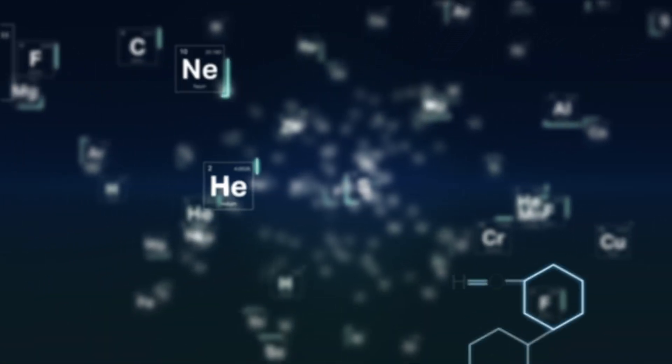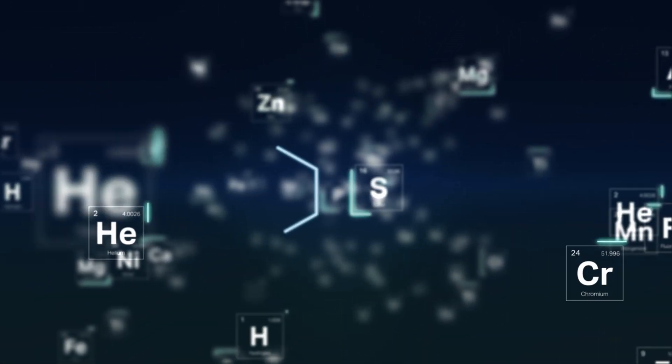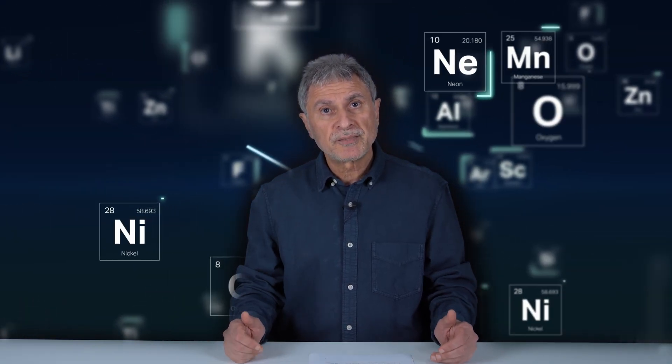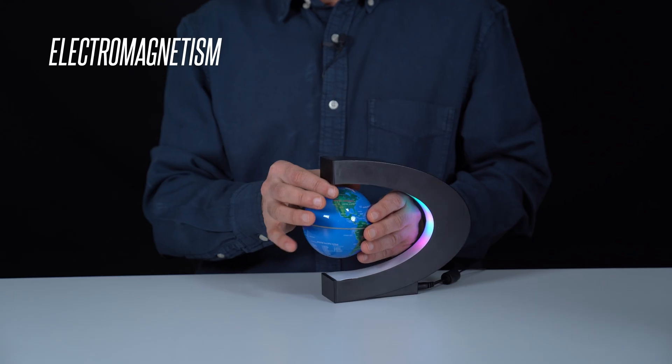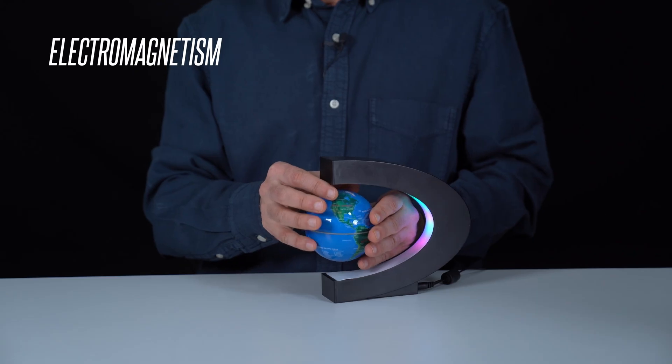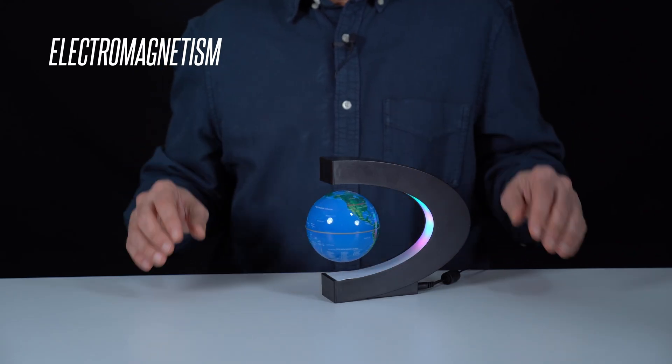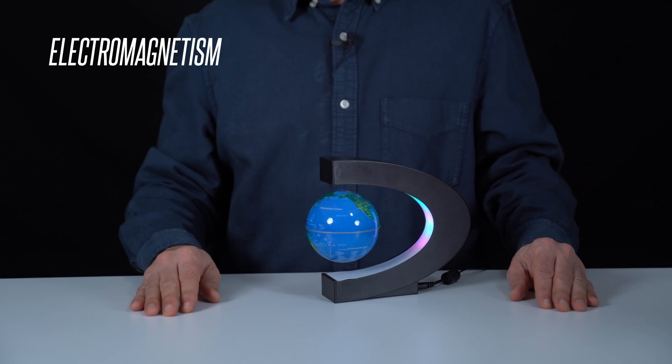What would happen if the strong force were stronger? The periodic table would be turned upside down — the universe project would be over from the beginning. This mini-world model works with electromagnetic force, one of these four forces. When electric current comes, electromagnets work and a magnetic field is created.